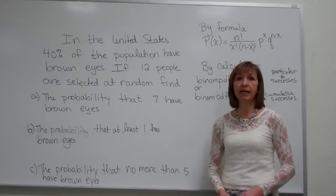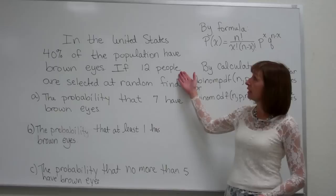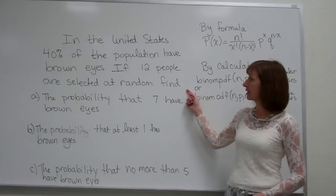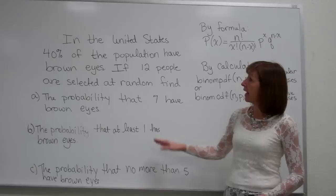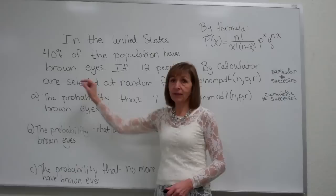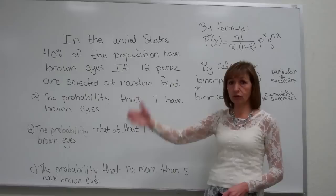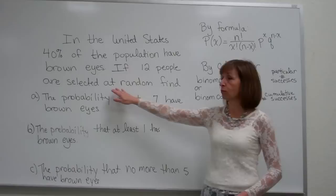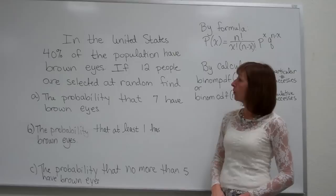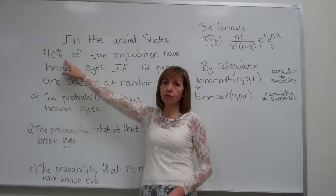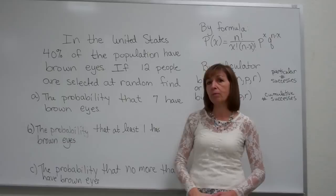In this problem stated on the board: in the United States, 40% of the population have brown eyes. If 12 people are selected at random, find — and there are three different probability questions. This fits: someone either has brown eyes or they don't, giving us a success or failure situation. We have a fixed number of 12 repeated trials, the selections are independent since people are chosen at random, and the probability of success is 0.40 in each trial. So this has the components needed to be a binomial probability problem.